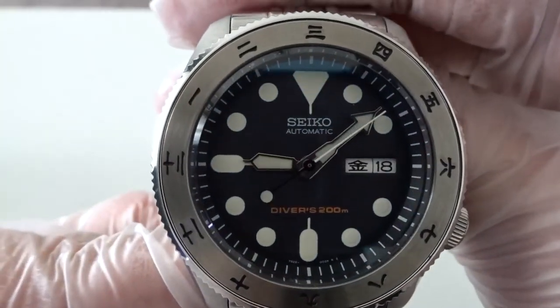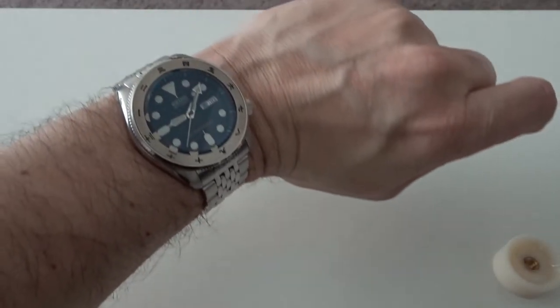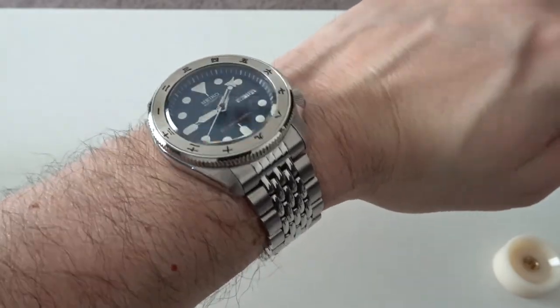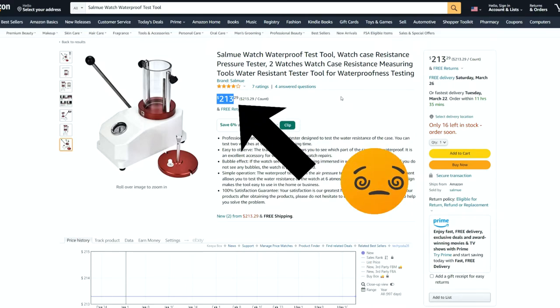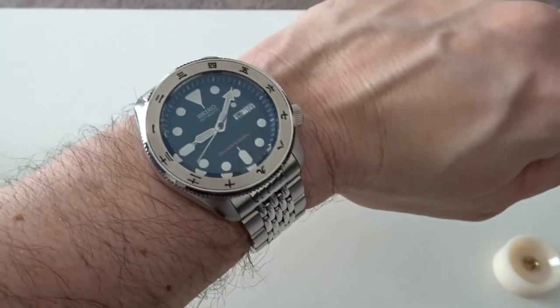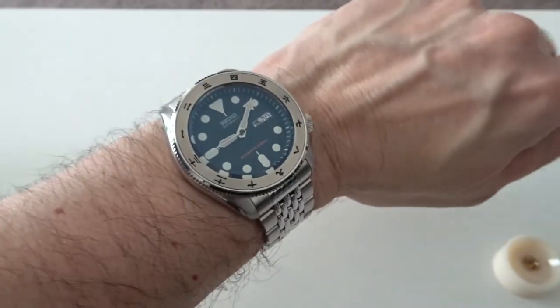I guess if someone really wanted to be thorough after one of these mods, they would check the water resistance integrity with a pressure tool. I don't have one of those, but I also don't dive with my watches so for me it's something that I don't bother checking. I'd say though that if water resistance integrity is a big concern for you, it probably would be safer to just not mod your watch and just leave it in OEM condition.